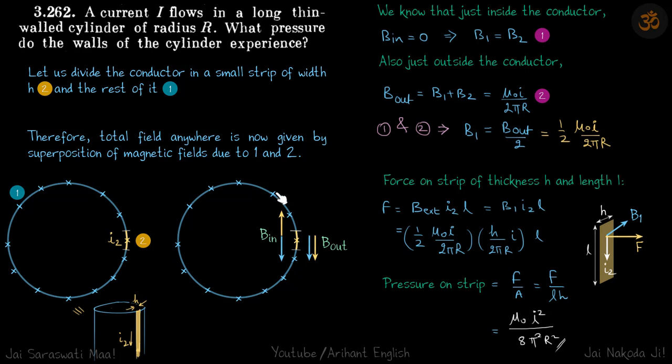For that we will use again the principle of superposition. The yellow field is because of the strip and blue field is because of the rest of the conductor.